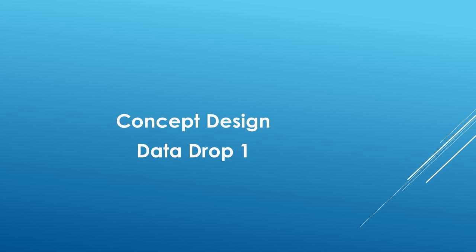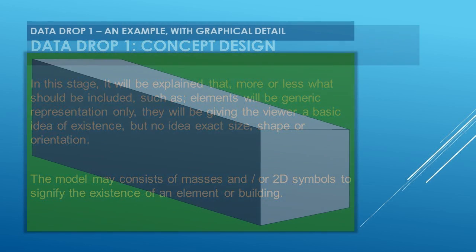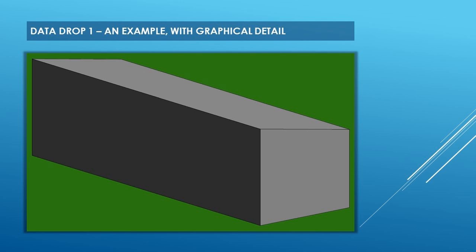Let's look at Data Drop 1 — the concept design stage. In this stage, it will be explained what should be included, such as: elements will be a generic representation only, giving the viewer a basic idea of existence but no idea about exact size, shape, or orientation. The model may consist of masses and/or 2D symbols to signify the existence of an element or building. Data Drop 1 — an example with graphical detail.